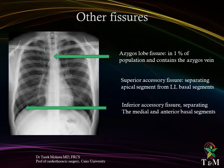Other fissures include: the azygos lobe fissure, present in 1% of the population and containing the azygos vein; the accessory fissure, separating the apical segments from the lower lobe basal segments; and the inferior accessory fissure, separating the medial and anterior basal segments.